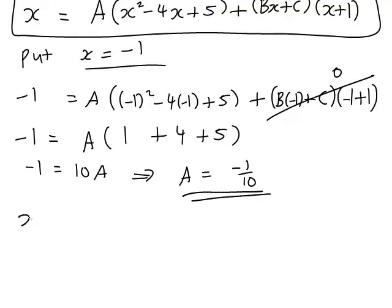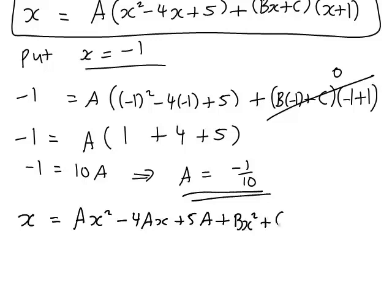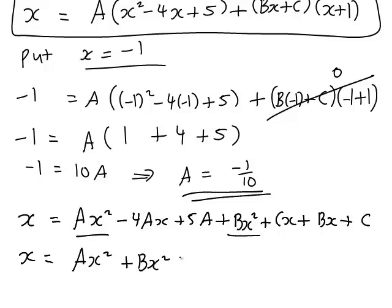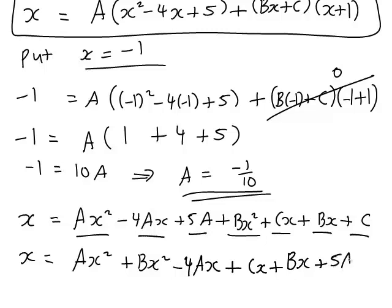The left-hand side is just equal to x. Expanding the right-hand side we get ax squared minus 4ax plus 5a. Then expanding (bx plus c)(x plus 1) gives bx squared plus cx plus bx plus c. Grouping like terms: the x squared terms give (a plus b)x squared, the x terms give (negative 4a plus c plus b)x, and the constants give 5a plus c.